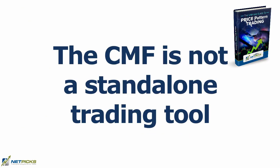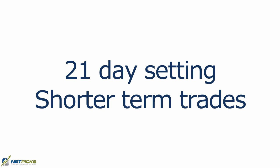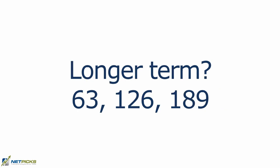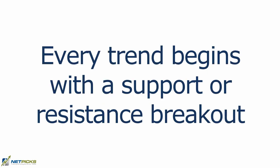The first thing you have to know is that it's not a standalone trading tool — you'll want to use some other form of technical analysis alongside it, such as trading price action or price patterns. For short-term traders, the 21-period setting should suffice. If you're looking longer term, use 63, 126, and 189 for three-, six-, and nine-month periods respectively.